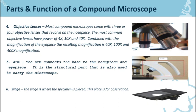Number five is the arm. The arm connects the base to the nose piece and eyepiece, and it is the structural part that is also used to carry the microscope. For us to be able to hold the microscope, kailangan natin ng arm — kasi ito yung mismong nag-hold doon sa may eyepiece, sa ocular lens, sa objective lenses, and the nose piece.